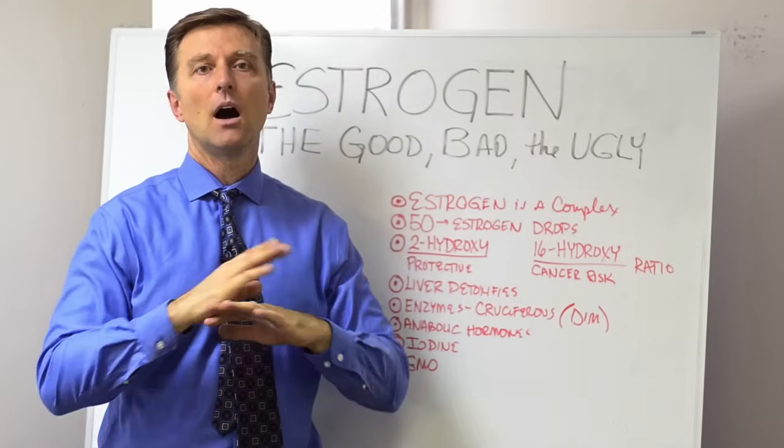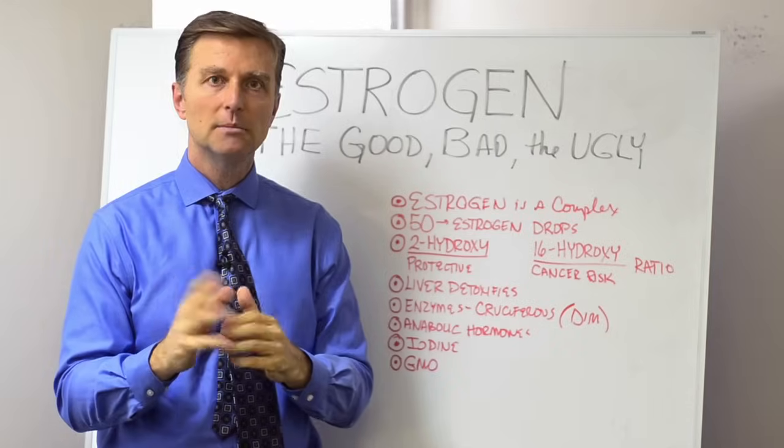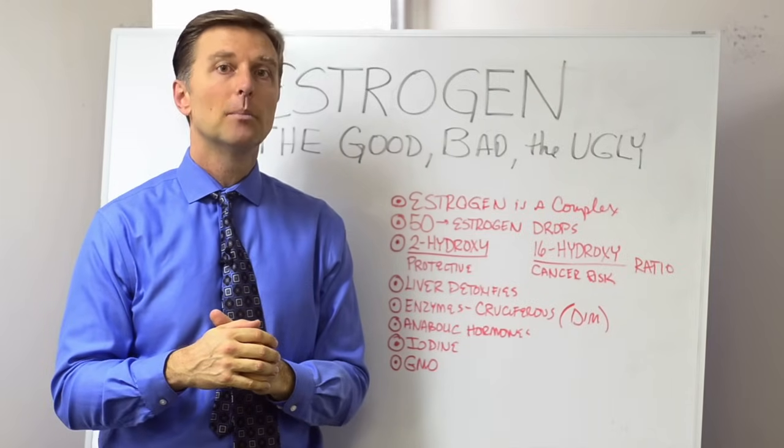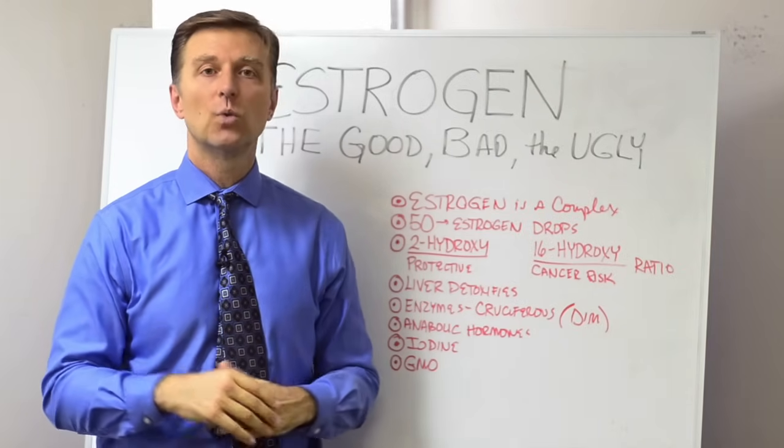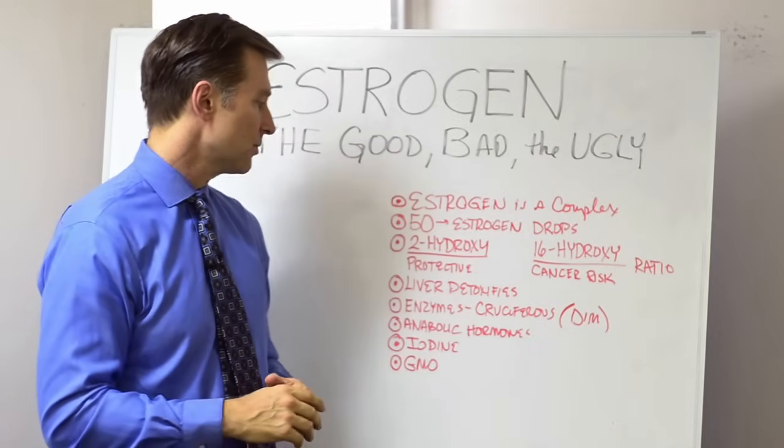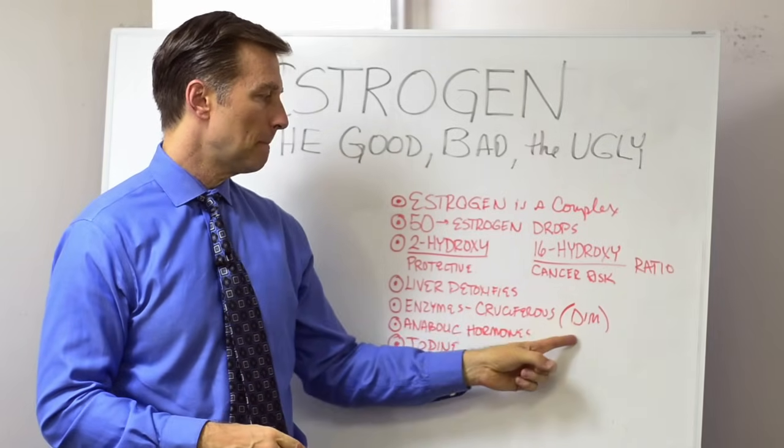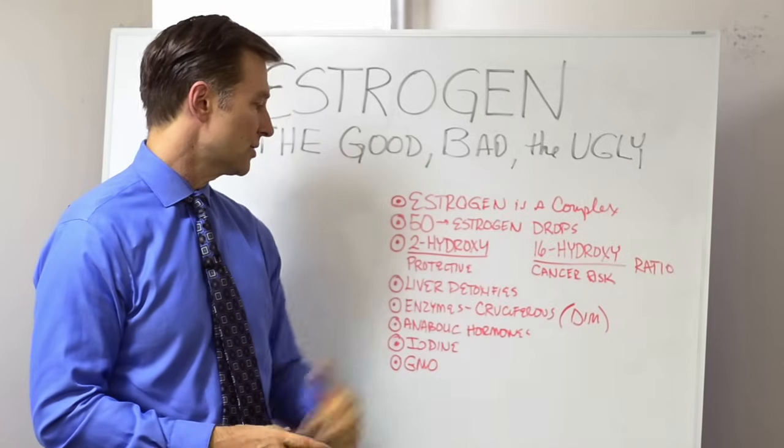Brussels sprouts - awesome. You can even steam them, cook them, and you'll still get a lot of benefits. Broccoli is amazing. Arugula, awesome. So those are really good cruciferous to give you the DIM to be able to balance these ratios.